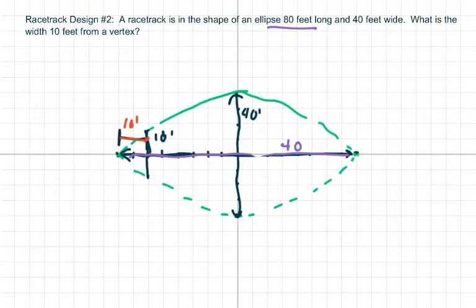So this little piece here, the width is 10, because they give you that. So this is 10 and this would be 30, because 10 and 30 is 40.